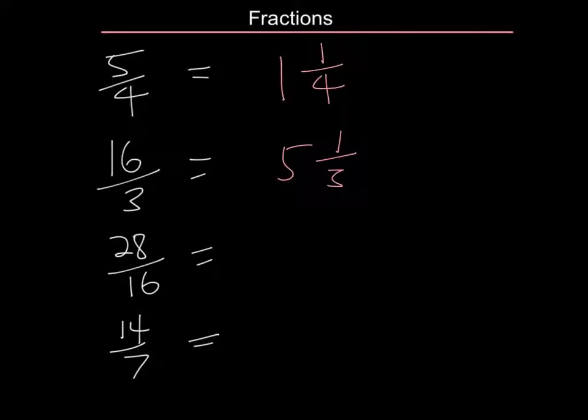For the next question, 28 divided by 16. Well, 2 sixteens are 32 so it's only going to go 1 time and there will actually be 12 sixteenths remainder. And I could simplify this because 12 sixteenths can cancel. So 4 goes into 12 three times and 4 goes into 16 four times. So that's a better answer.